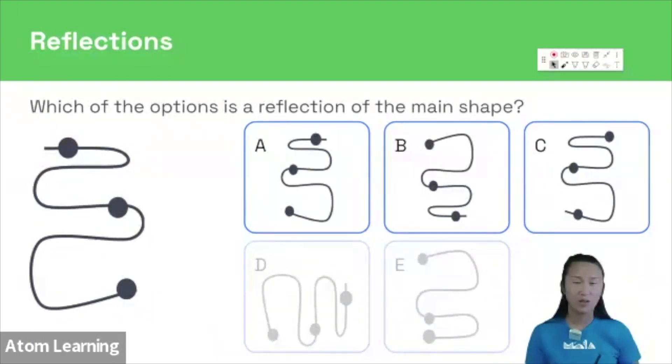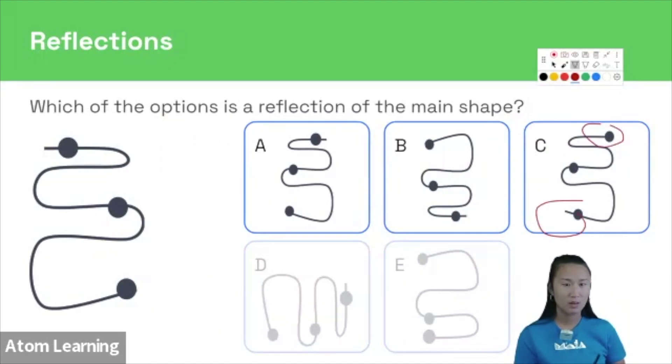And then if we look closely at C, we can see that the circles are in the wrong position. The top and bottom circles are in the wrong place. So we can rule out C.